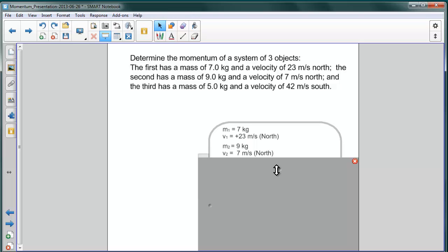And the final or third object has a mass of 5 kg and a velocity of 42 m/s to the south. And that is negative direction, so we make that negative 42 m/s.